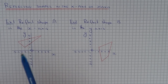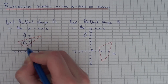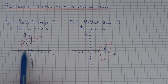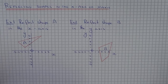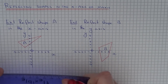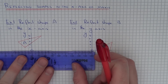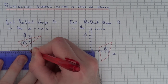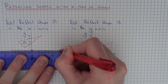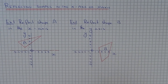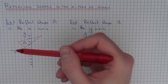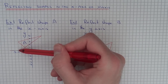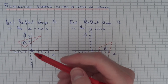So let's look at example one. We've got: reflect shape A in the x axis, which is here. So let's just go over the x axis and make it clear where we've reflected the shape. This x axis is our mirror line. With all reflections, count the distance of each corner to the mirror line and then it will be the same distance on the other side of the mirror line.